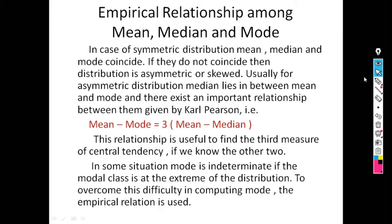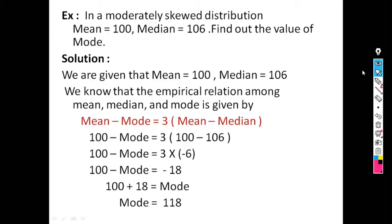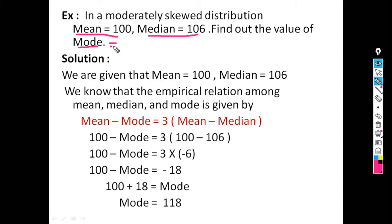For example, in a moderately skewed distribution, mean is equal to 100 and median is equal to 106. Find the value of mode. The values of mean and median are given; we have to find mode. We use the empirical relation: Mean − Mode = 3 × (Mean − Median).